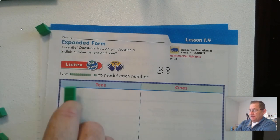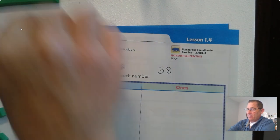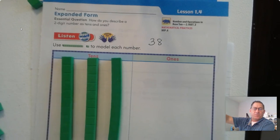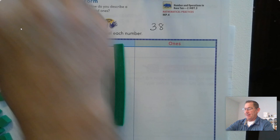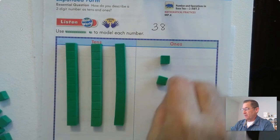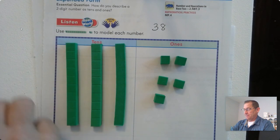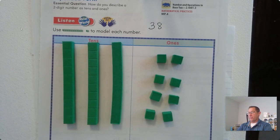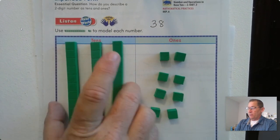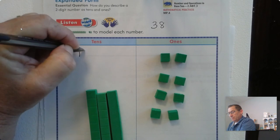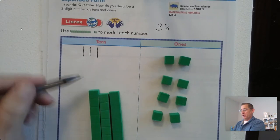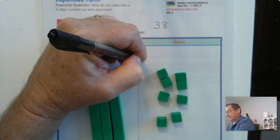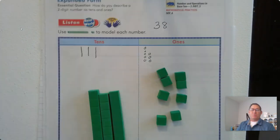38. All right. So what did you get? So 38 — the three means that there are three tens, and the eight means that there are eight ones. So we can show that by drawing three tens and eight ones.